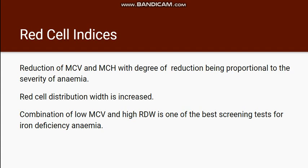Going to the red blood cell indices — in case of iron deficiency anemia there is a reduction in MCV, meaning a decrease in cell size. There is a decrease in MCH and MCHC, reflecting decreased hemoglobinization. Then there is an increase in RDW, which suggests variation in the size and shape of the RBCs. A combination of low MCV and high RDW is a very good screening test for iron deficiency anemia.